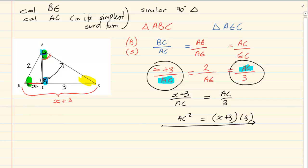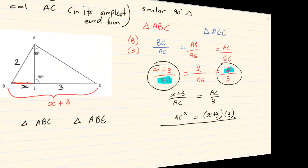Now if we want to calculate BE, with which 2 triangles are we working? We are now going to try and get BE into the equation. So we have triangle ABC again. And then we are going to have triangle ABE.